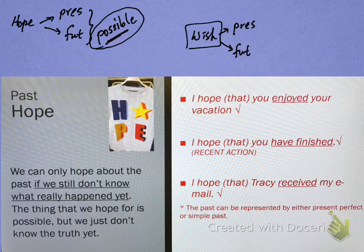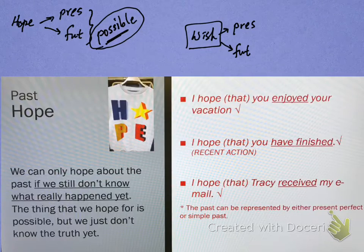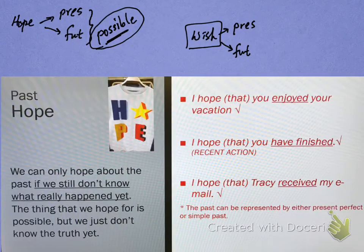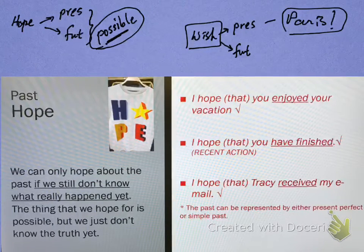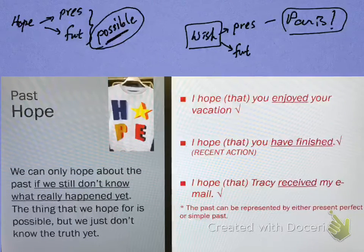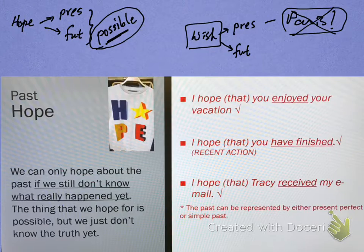Let's come over to wish. Wishes in the present are talking about things that are not likely to happen, and we're talking about things that are untrue in the present. For example, 'I wish I could go to Paris next week.' The truth is, I can't go to Paris next week — it's not going to happen. So that's a present wish.